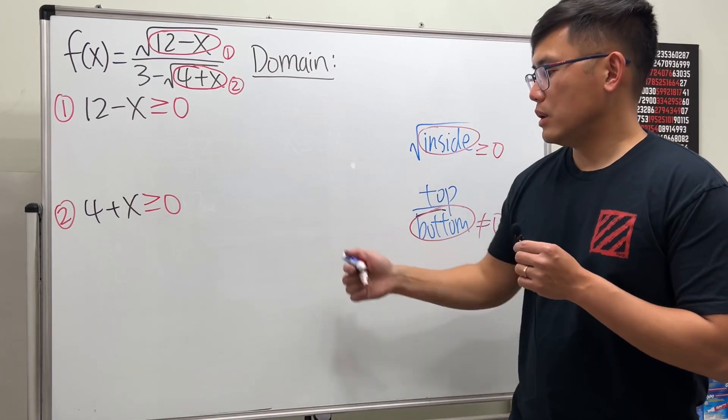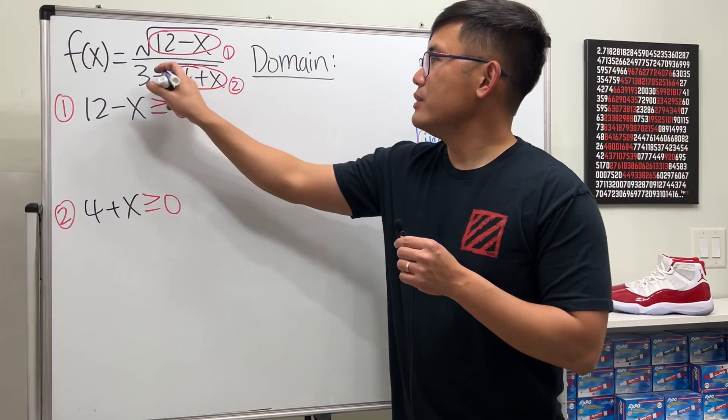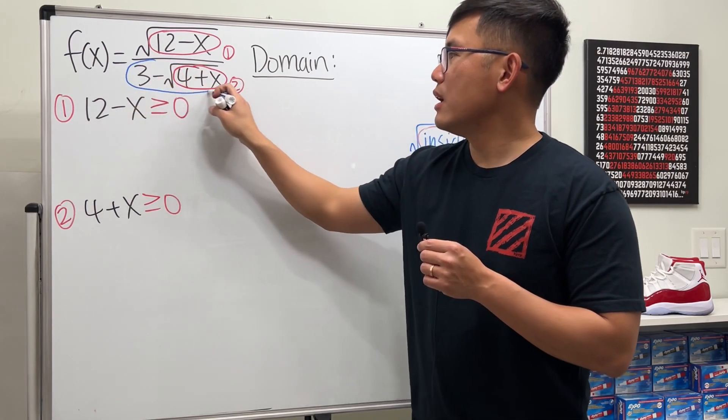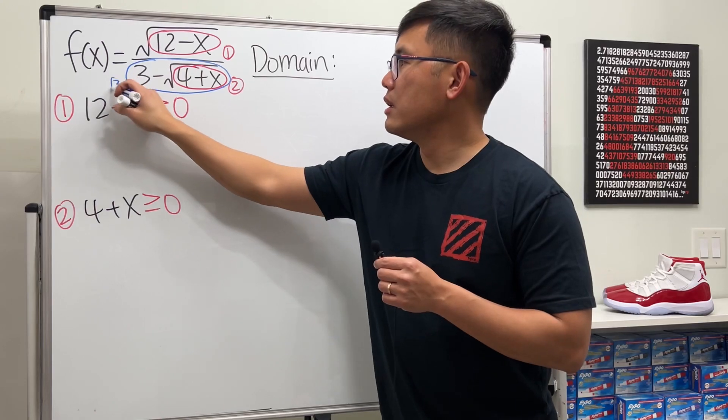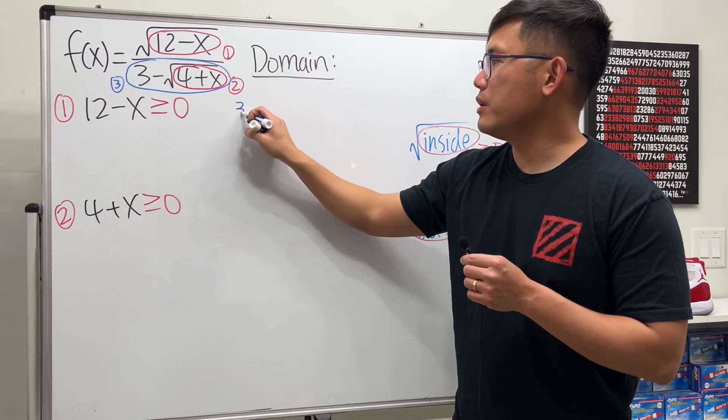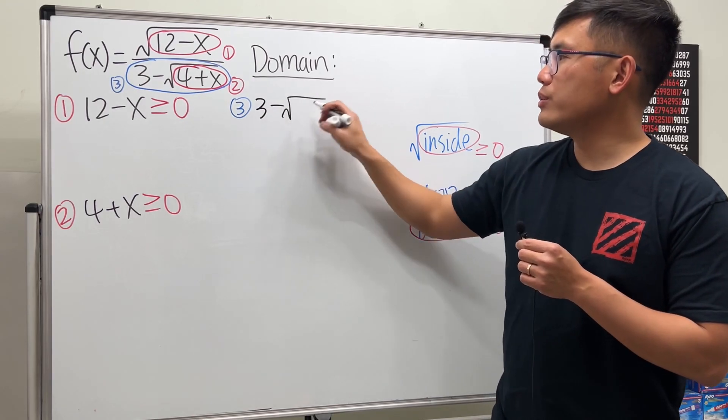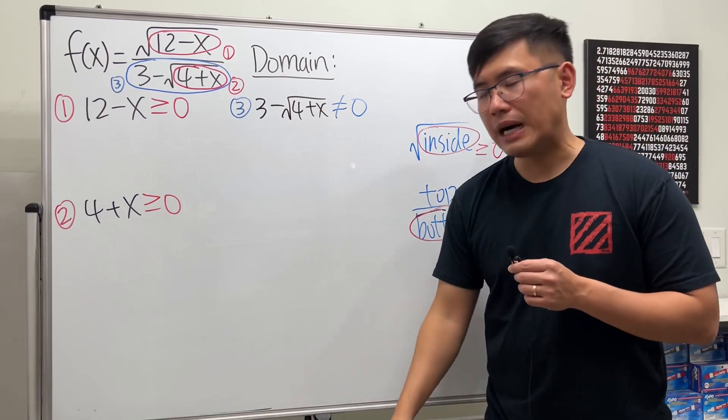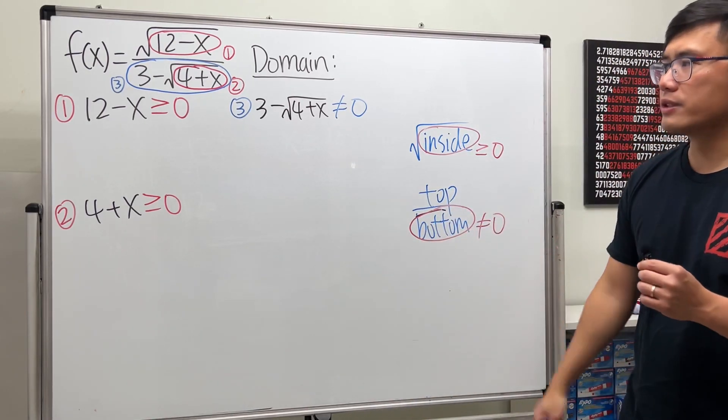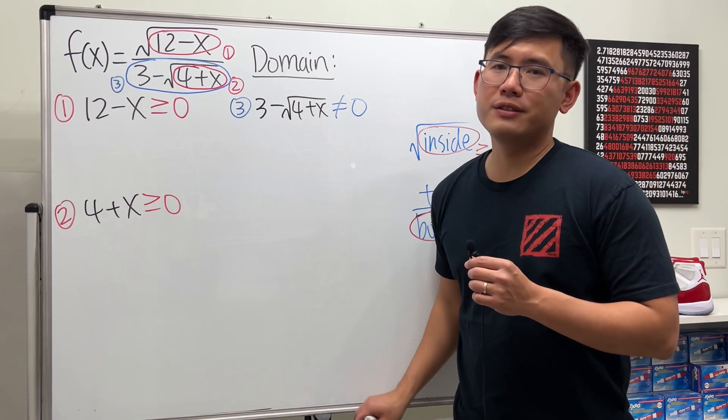We have the 3 minus the square root of 4 plus x. This is going to be condition 3. We will have to make sure 3 minus the square root of 4 plus x, this whole thing cannot be equal to zero, otherwise we'll be divided by zero. Of course, that's no good.